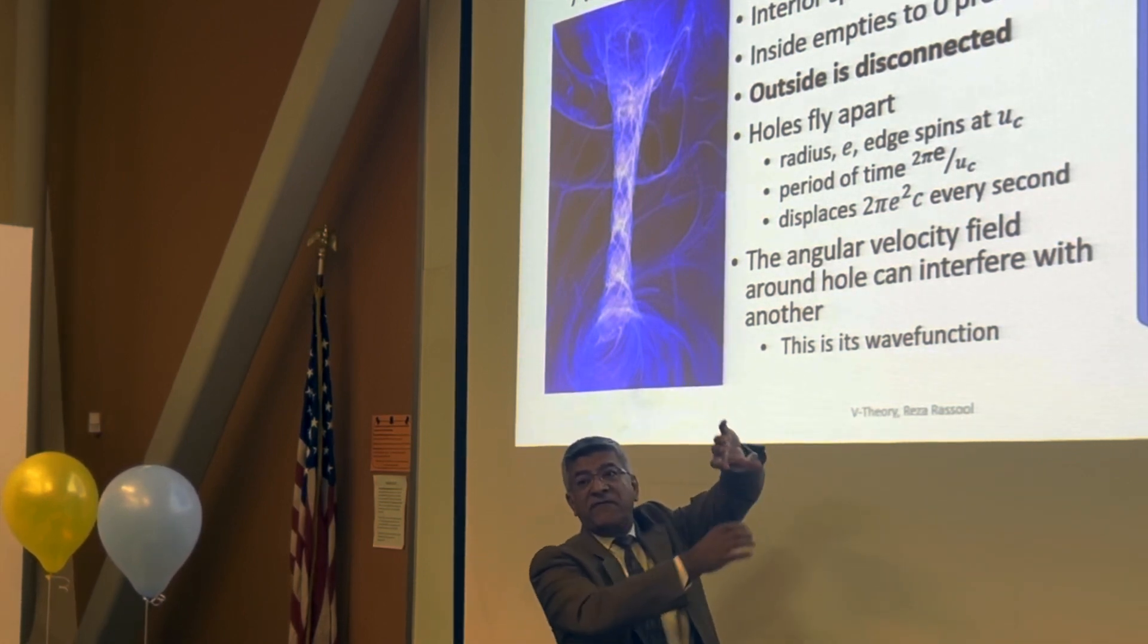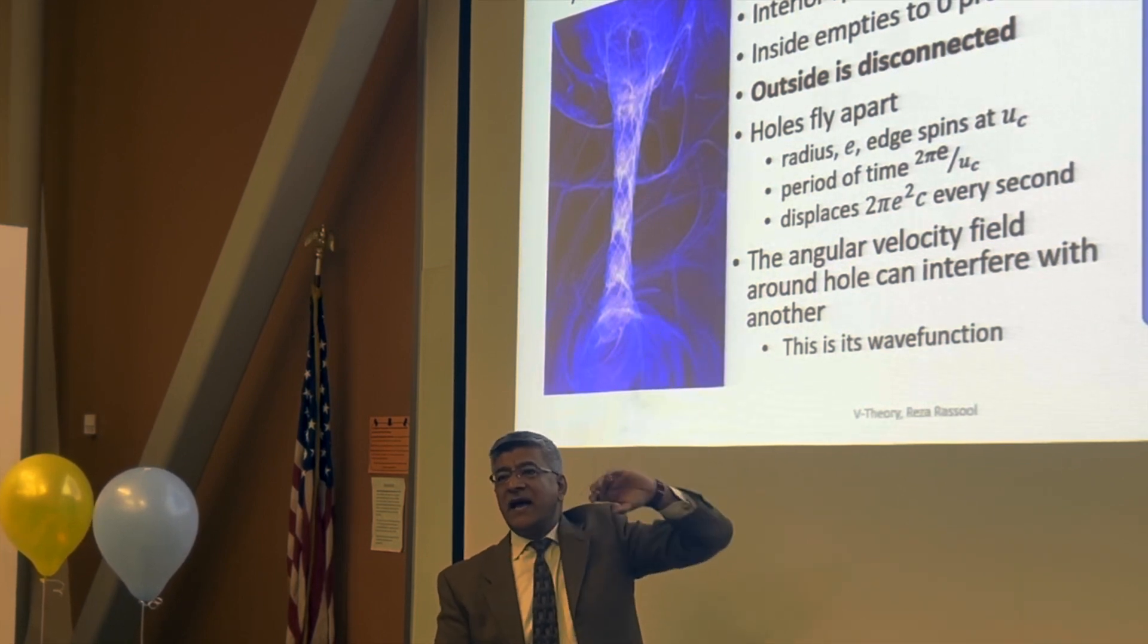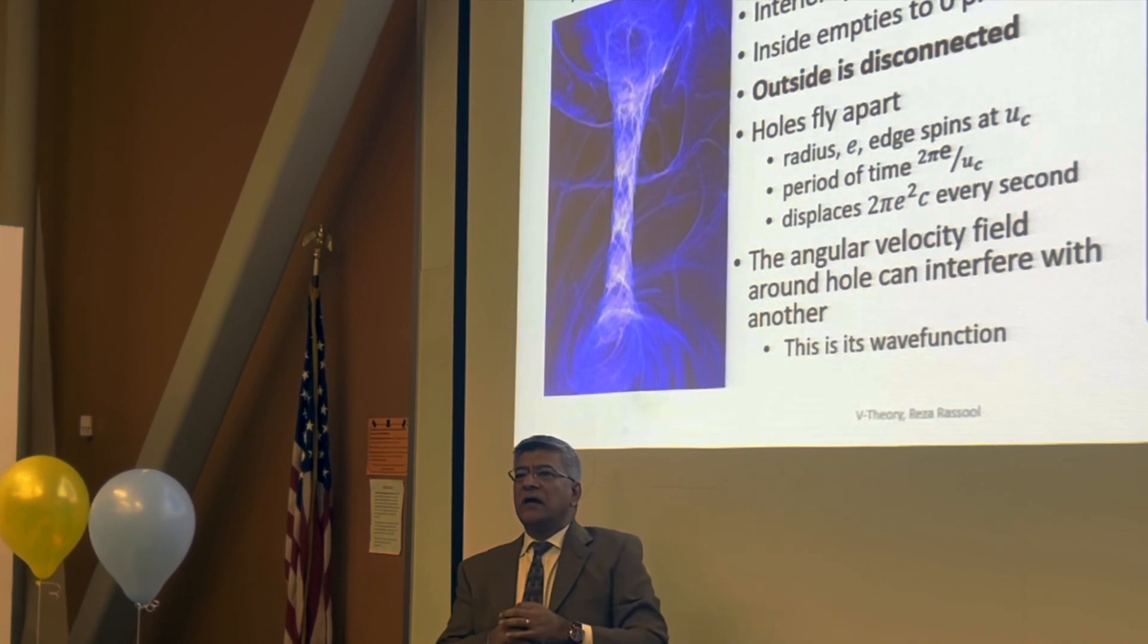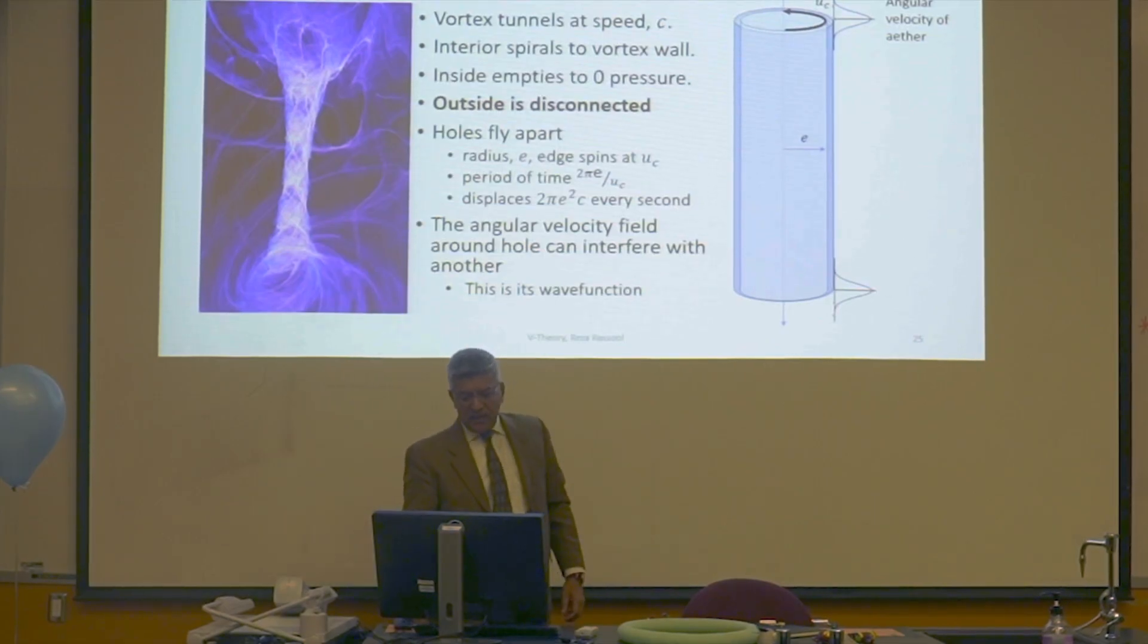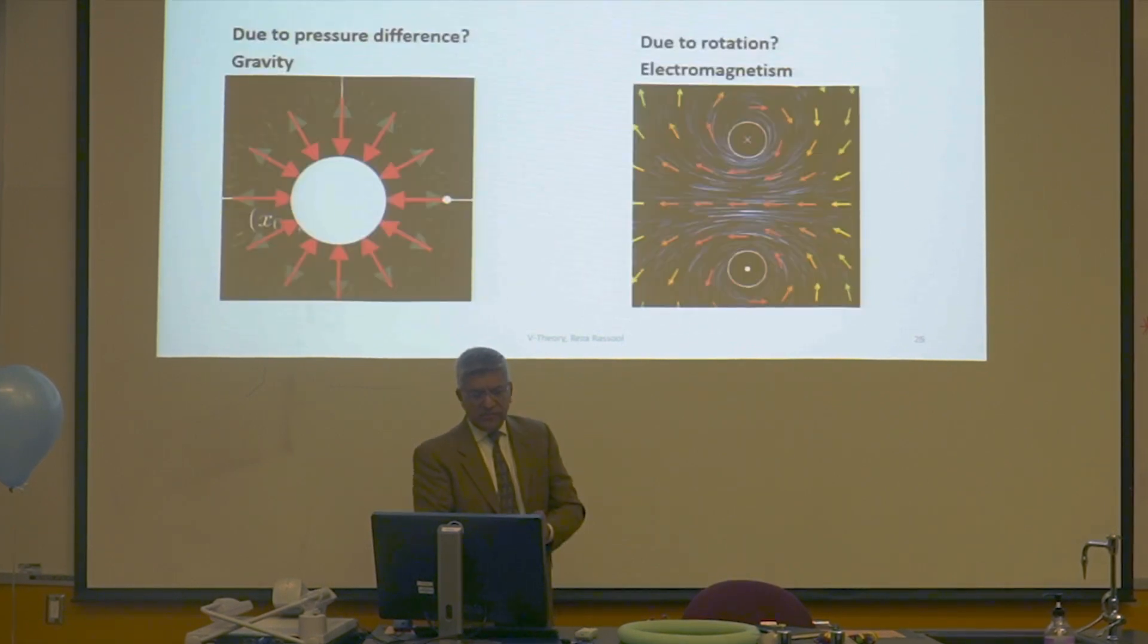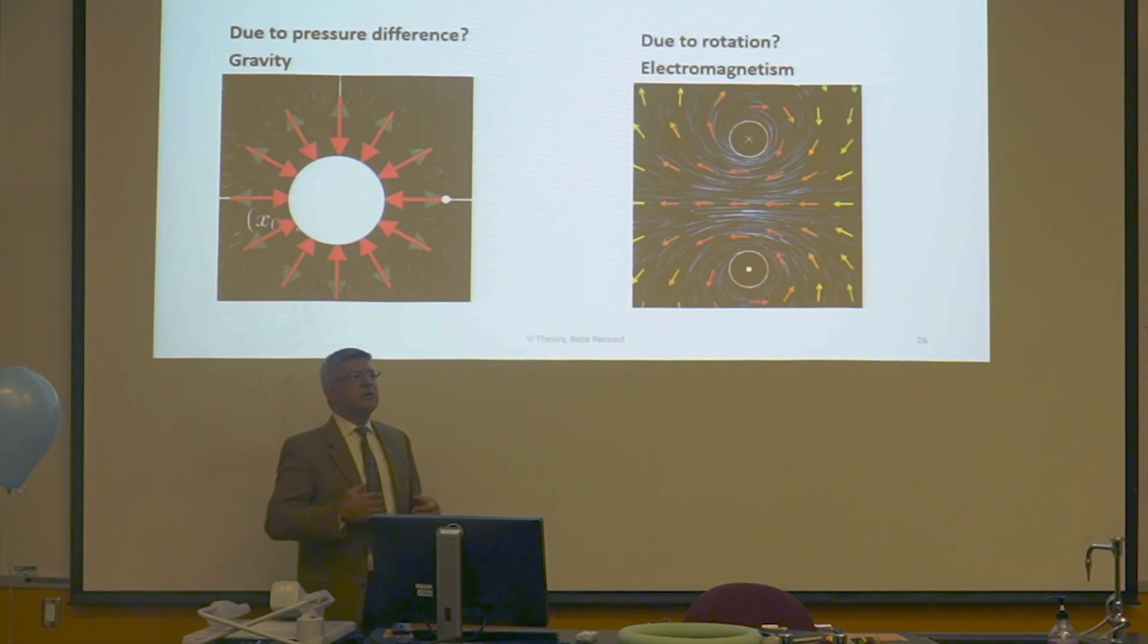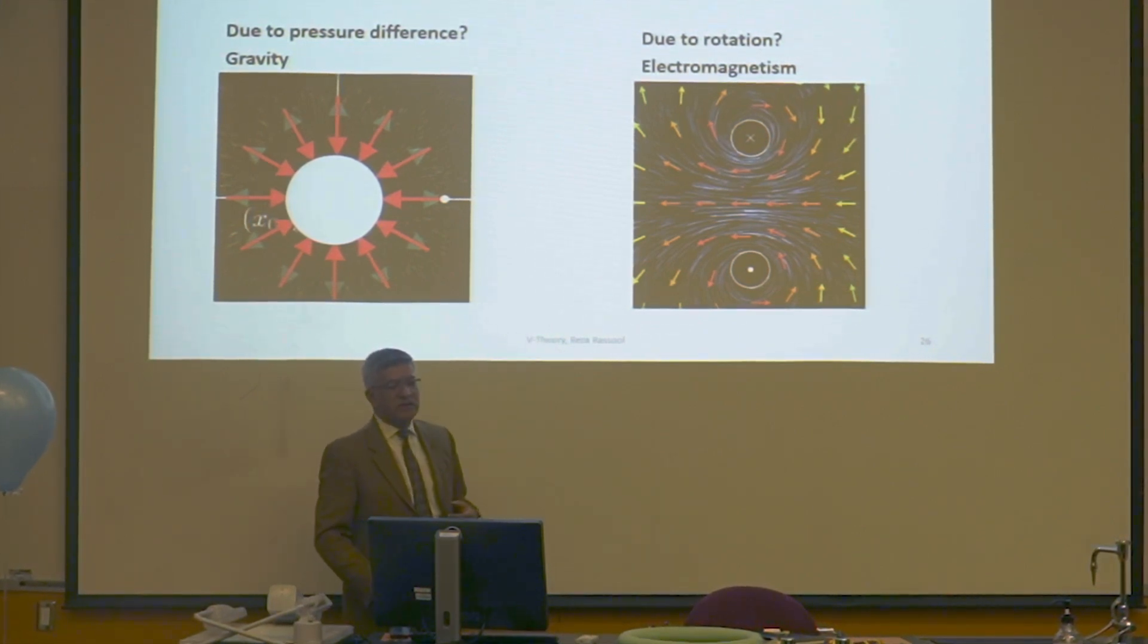What's the hole doing? The holes are flying apart from each other at the speed of light, at C, at the maximum speed that the fluid can support. So now we've got this notion that rotation causes a vortex, causes two holes to fly apart. There's nothing in the middle.